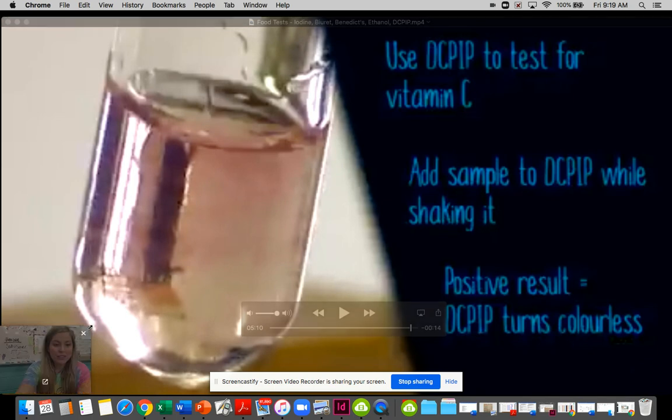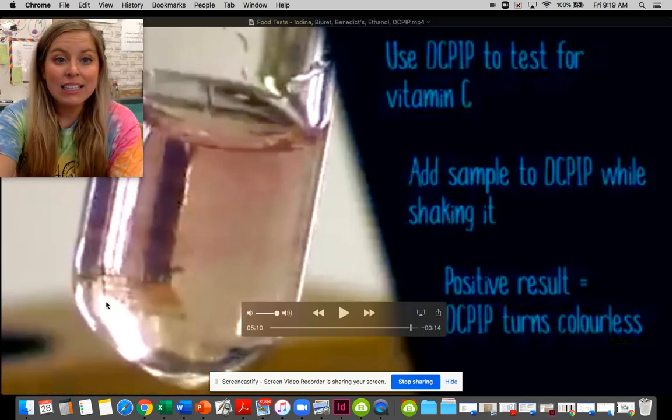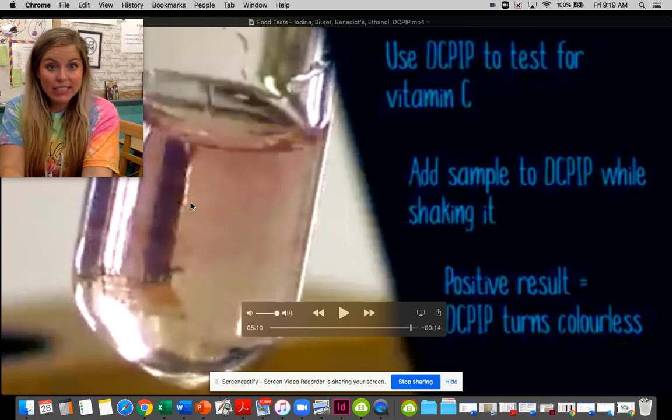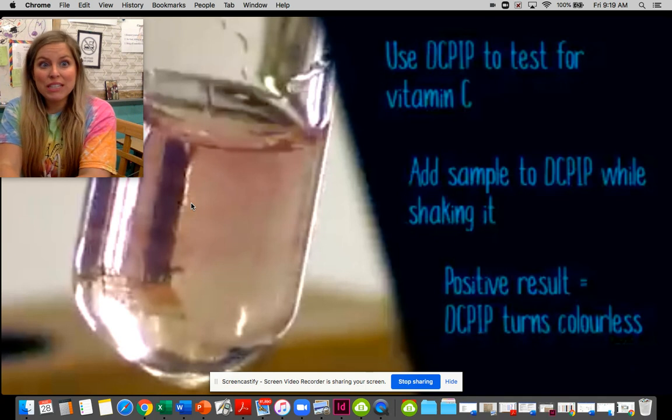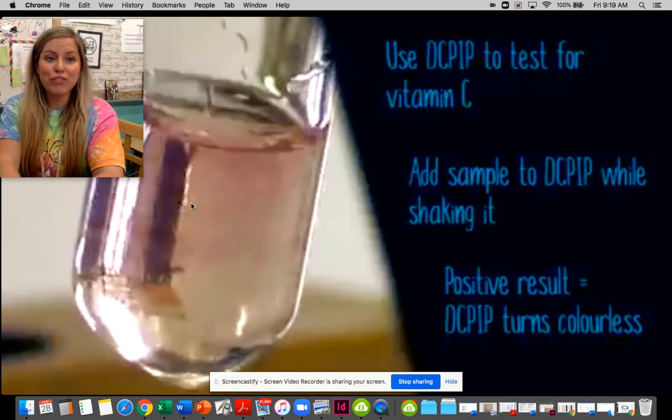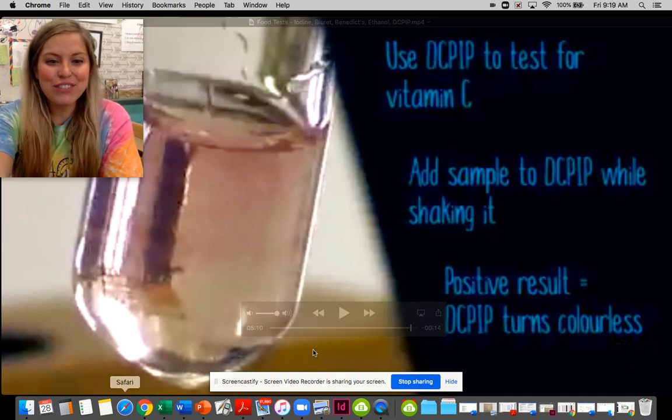Okay, so you can see in that food test, since this liquid turned colorless once the DCPIP was added, that means vitamin C was present in this test tube which contained fruit juice. Pretty much all fruit juices contain vitamin C, and that's the one that turned out positive.